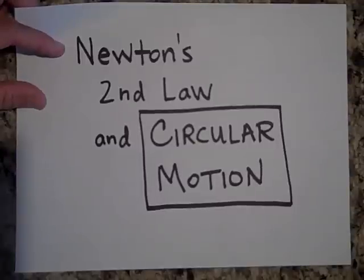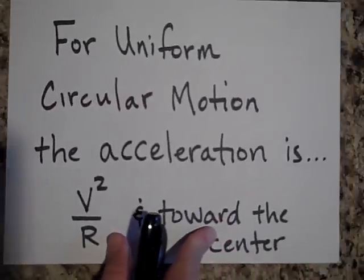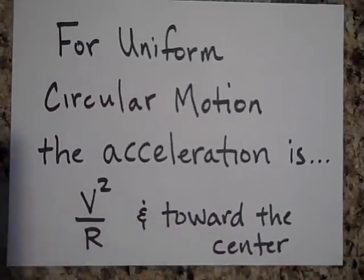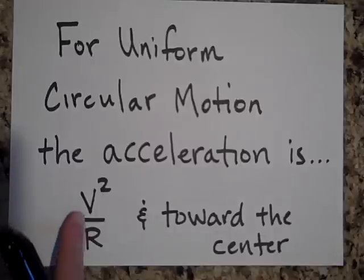Okay, the key thing to remember with circular motion problems is for uniform circular motion, the acceleration is v squared over R.